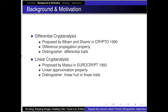Differential cryptanalysis is proposed by Biham and Shamir in Crypto 1990. It evaluates the security of a cipher by its difference propagation property, and in this method it often uses differential trails as a distinguisher. Linear cryptanalysis is proposed by Matsui in Eurocrypt 1993. It evaluates cipher security by the linear approximation property, and uses linear hulls or linear trails as a distinguisher.